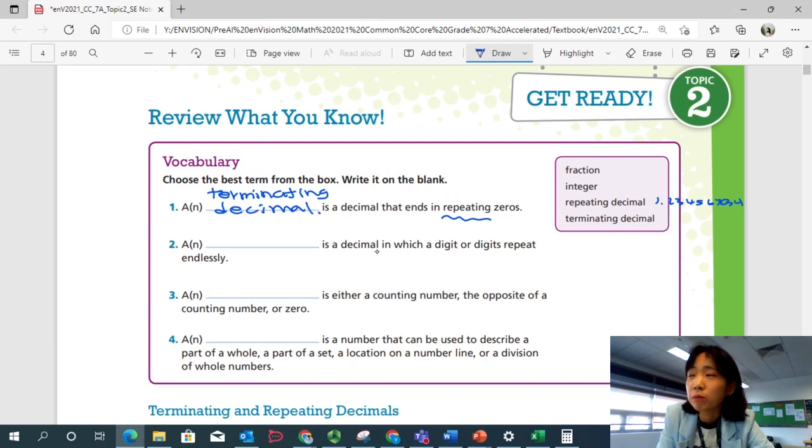A or N blank is a decimal in which digit or digits repeat endlessly. Now this repeat means you're repeating the decimals. So yes, this is a repeating decimal.